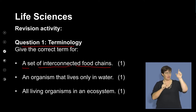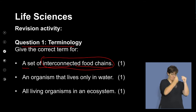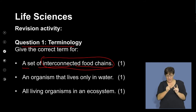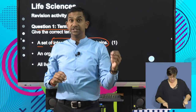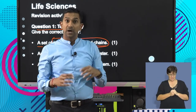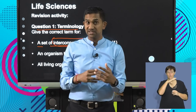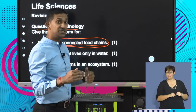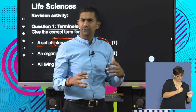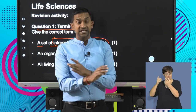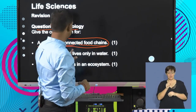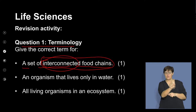Remember that a food chain shows the flow of energy from the producers all the way up to the different trophic levels. However, when we go into an ecosystem, we see that food chains are interconnected — at different levels they connect with each other. The term that describes interconnected food chains is called food webs.